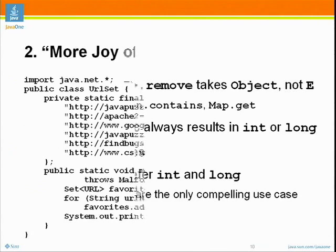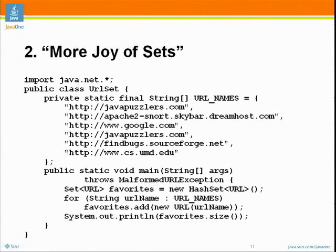Yours was the joy of sets. Mine is 'more joy of sets', and mine is superficially similar — yours considered sets of shorts, mine considers sets of URLs. So what we do is we have a list of strings that are my favorite URLs. We make a HashSet, put the URLs into it, and then we print the size. My question is simple: what does this program print?